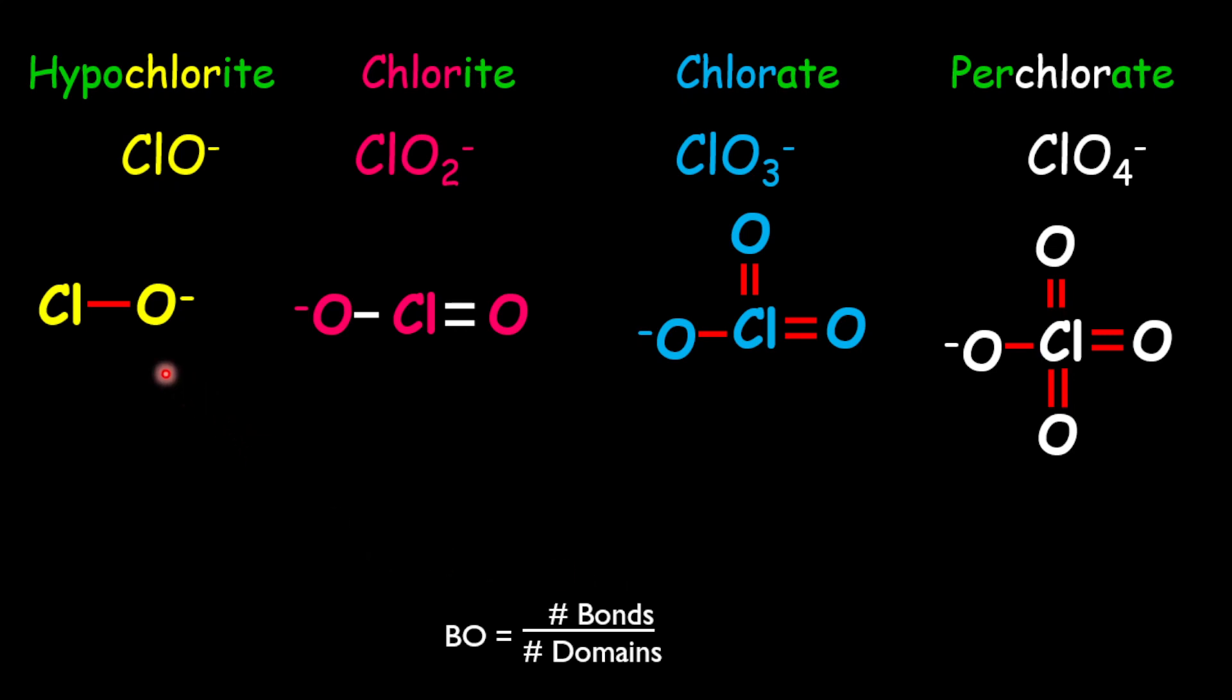In the first structure, if you realize here, we have a single bond between the chlorine and the oxygen. Once there is a single bond, then you know that the bond order is 1. However, if you want to use the formula, then you are going to say a bond of 1 and there is also 1 domain. So therefore, the bond order will be given as 1 divided by 1, which equals 1.